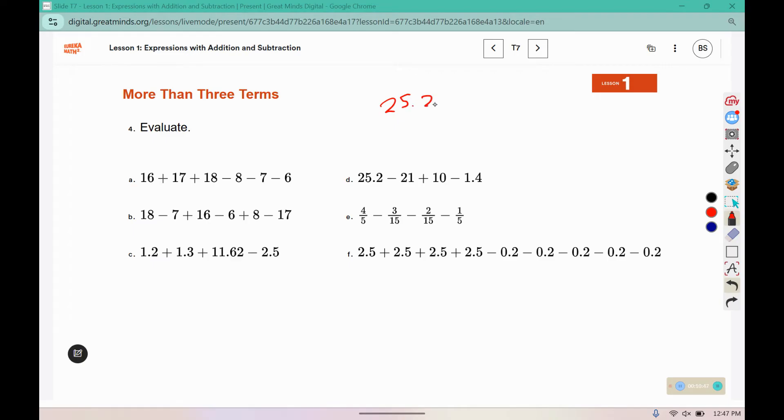25.2 minus 21. Remember to line up the decimal places. 2 minus 0 is 2, 5 minus 1 is 4, 2 minus 2 is 0. So that takes care of these pieces. And then it tells us to add 10. 0 plus 2 is 2, 0 plus 4 is 4, 1 plus nothing is 14.